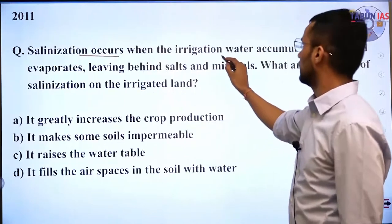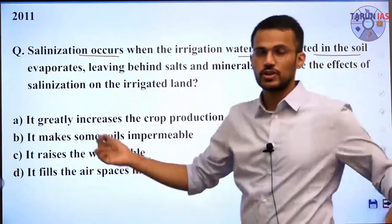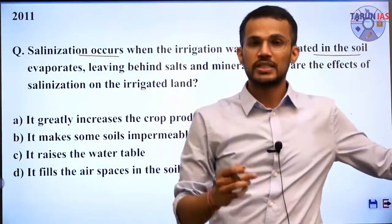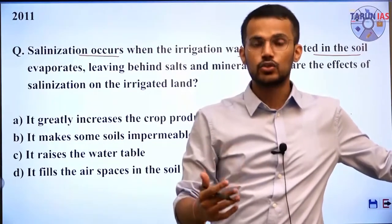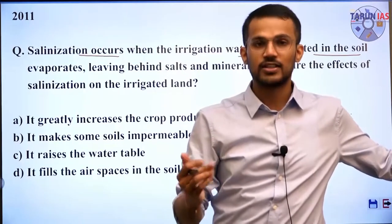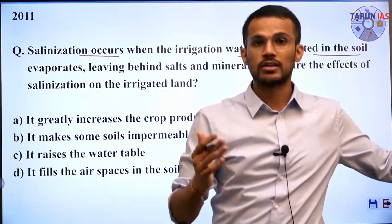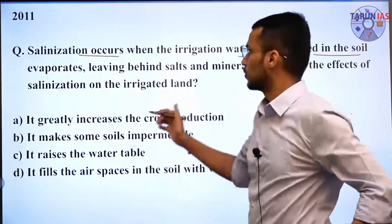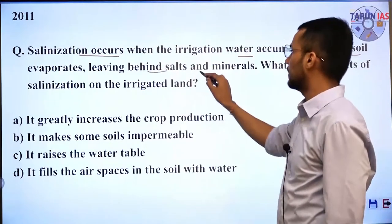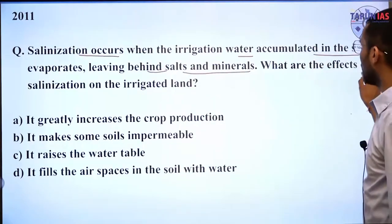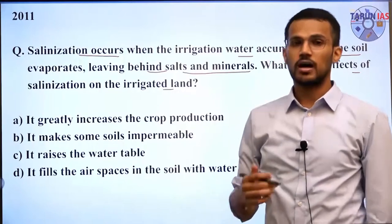Salinization occurs when the irrigation water accumulated in the soil evaporates. We have discussed that over-irrigation leads to salinization, which is nothing but the accumulation of salts in soil as water gets evaporated. Salinization occurs when the irrigation water accumulated in soil evaporates, leaving behind salt and minerals. What are the effects of salinization on irrigated land?